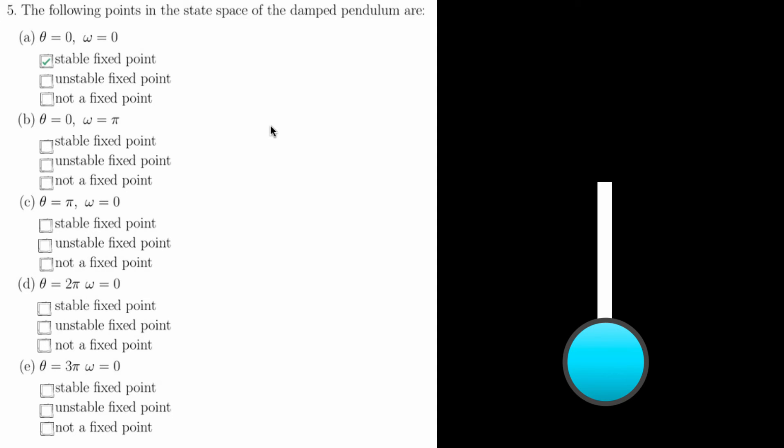Part B is a little bit trickier. So if theta equals zero, so it does correspond to this same pendulum, however, omega, which is the velocity, is pi. So while the pendulum is in this bottom position, it is moving at a velocity of pi, because of this angular velocity.